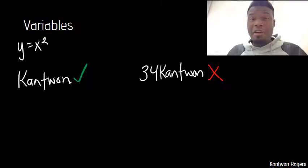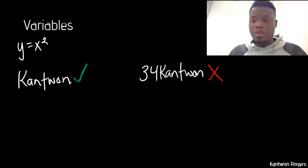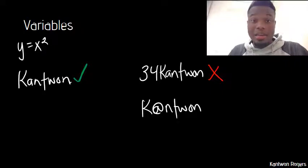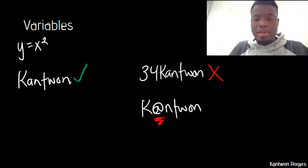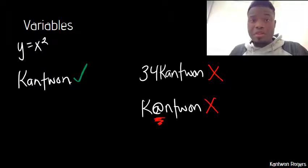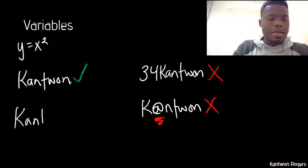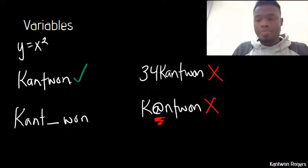As we're talking about special characters, variables also cannot contain special characters at all. So if I wanted to have a variable called 'canton' with the at sign, that's not valid because it contains a special character. However, underscores inside of variable names are allowed — that's not considered a special character. So something like 'can_one' is a valid variable name.